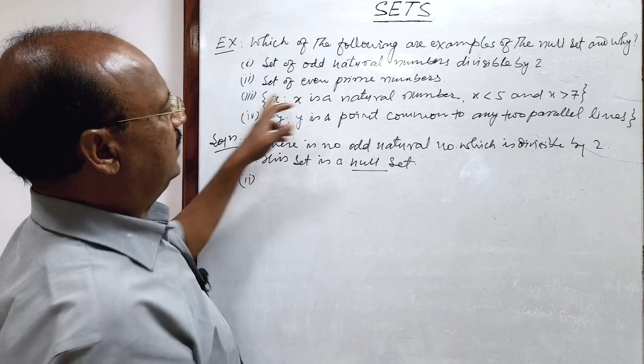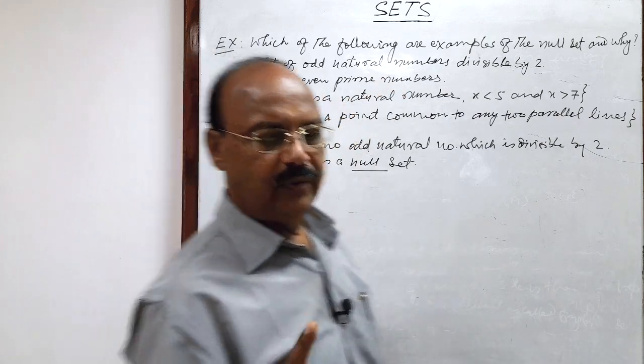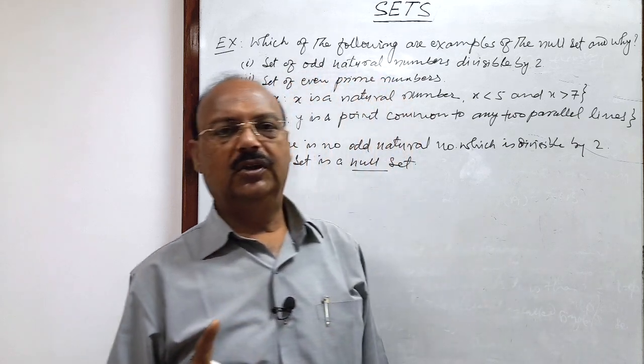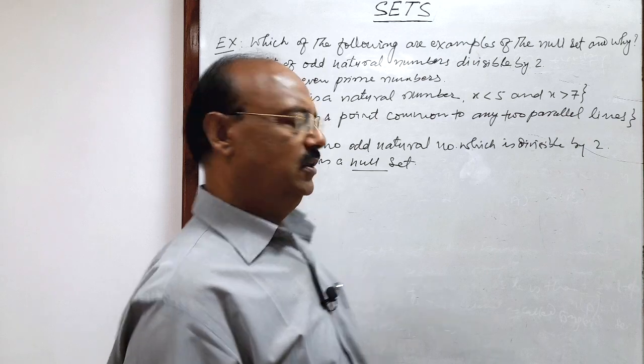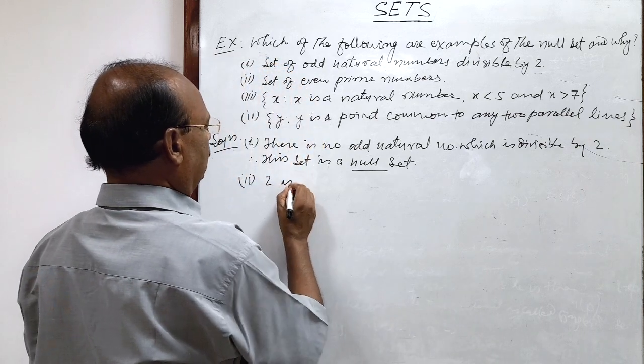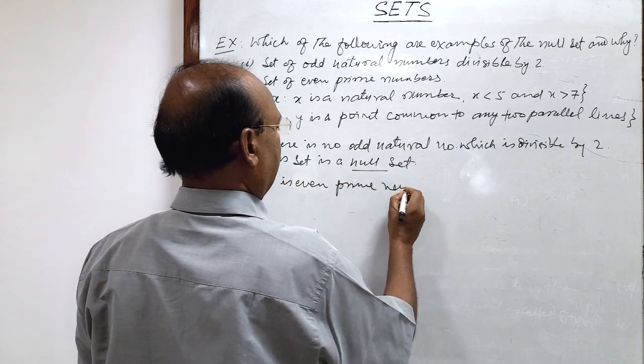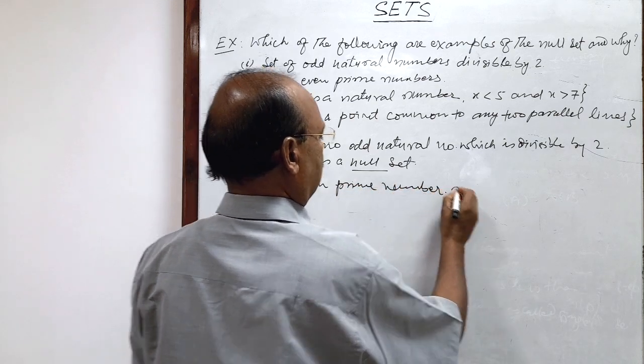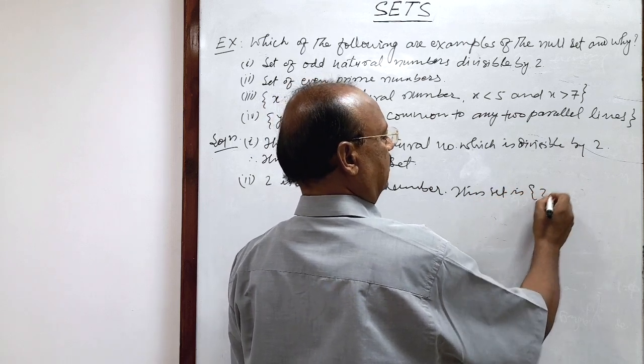Second, set of even prime numbers. 2 is a number which is even as well as prime number. So we know that 2 is even prime number, so this set is this one.